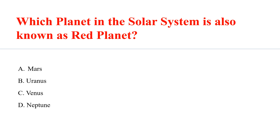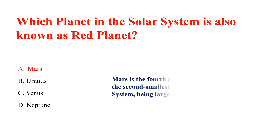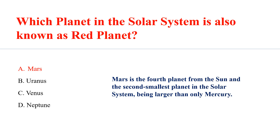Which planet in the solar system is also known as the Red Planet? Mars is the fourth planet from the Sun and the second smallest planet in the solar system, being larger than only Mercury.